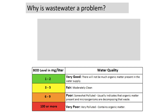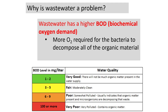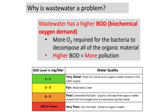Why is wastewater a problem? Wastewater has a higher BOD — biochemical oxygen demand — meaning more oxygen is required for bacteria to decompose all the organic material. In terms of milligrams per liter: 1–2 means not much organic matter; 3–5 is fairly clean; 6–9 is considered poor and somewhat polluted; anything over 100 is considered very polluted with organic matter. The higher the BOD, the more pollution.